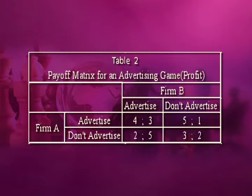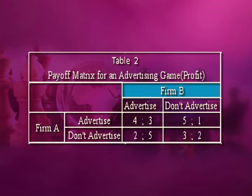Similarly, if we analyze firm B's strategy given the strategies of firm A, we will find that firm B has a dominant strategy to advertise irrespective of what strategy firm A adopts. Thus, in this case both firms A and B have a dominant strategy of advertising. Here, final equilibrium exists for both firms irrespective of whether firm A or firm B chooses its strategy first, or if both firms decide on their best strategy simultaneously.